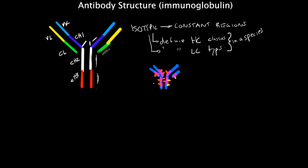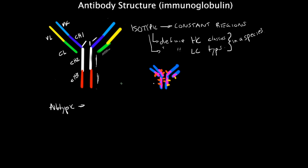Next we have allotypic determinants. Allotypic determinants are located in the constant regions as well, and they might vary from individual to individual. So if you look at an IgG molecule, remember that IgM and IgG are of the same mouse in a species — they might be different within the same species.